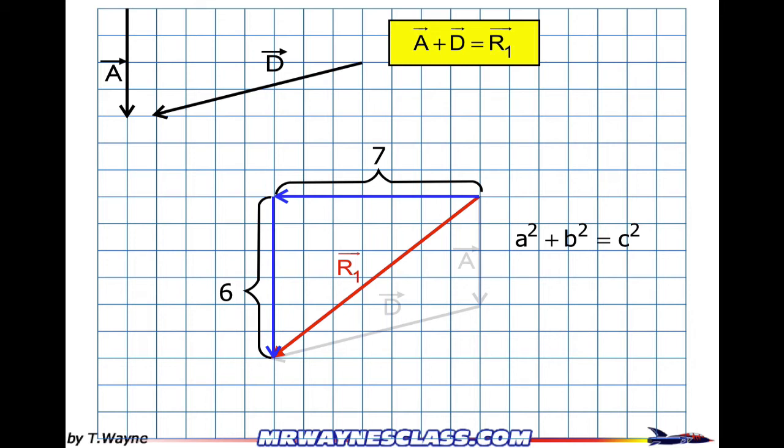To find the magnitude, I'm going to use Pythagorean's Theorem. A squared plus B squared equals C squared. So 6 squared plus 7 squared equals C squared. That means C is equal to 9.21 units in length. So that's the magnitude of R1.